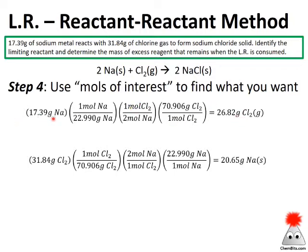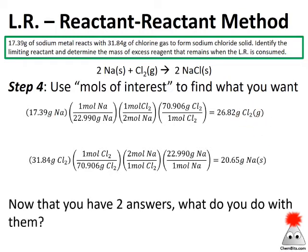So 17.39 grams of sodium will react with 26.82 grams of chlorine gas. Running the parallel calculation, 31.84 grams of chlorine will react with 20.65 grams of sodium. We've used the reactant-reactant method both ways — going from one reactant to determine how much of the other is needed. But we haven't actually answered the question yet, because we've got two answers. What do we do with them?